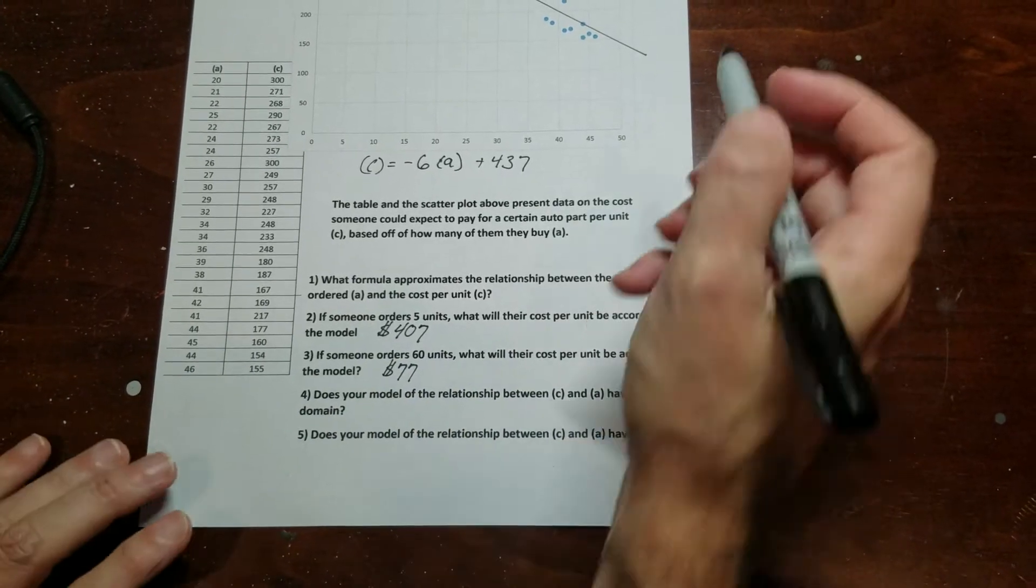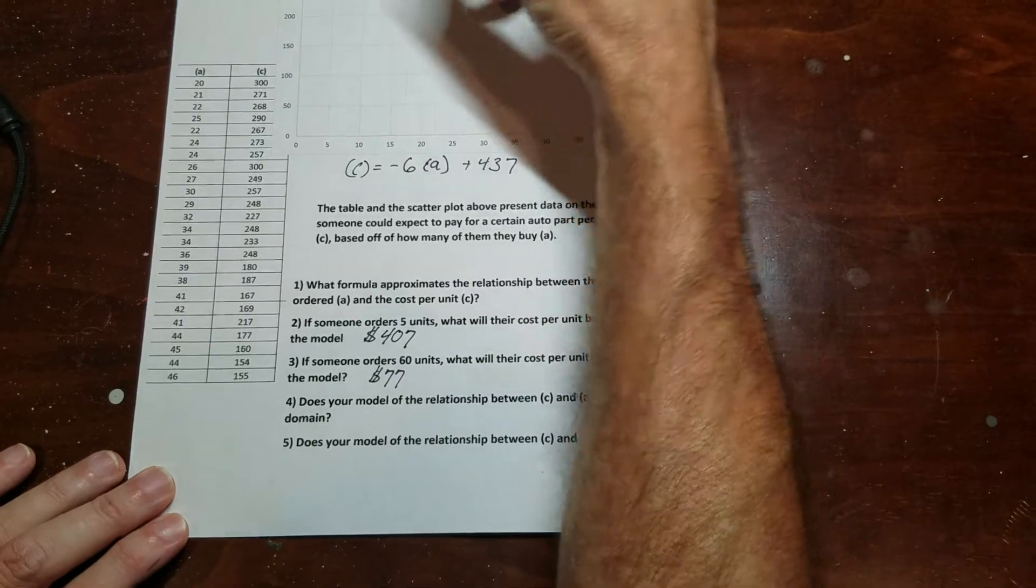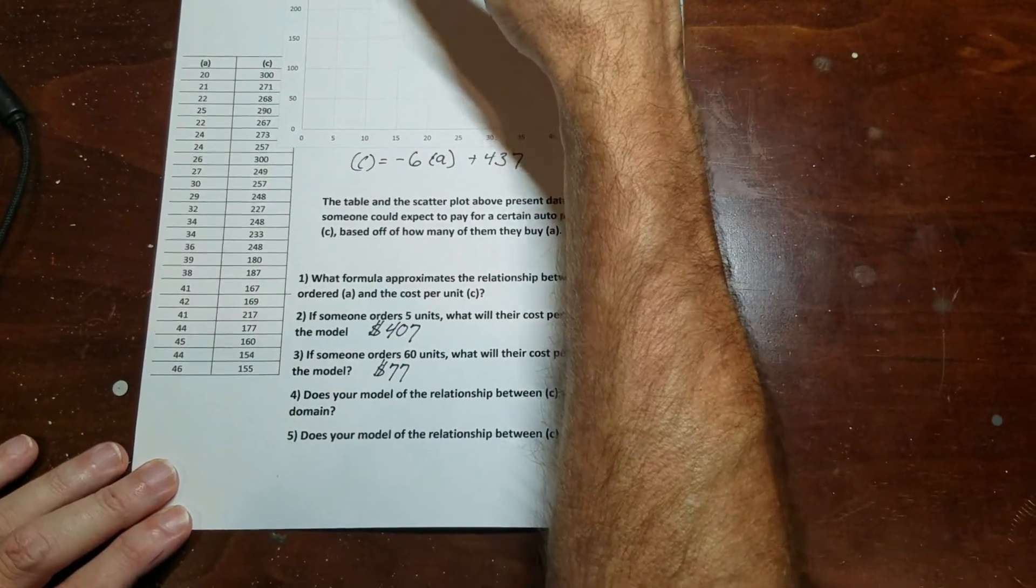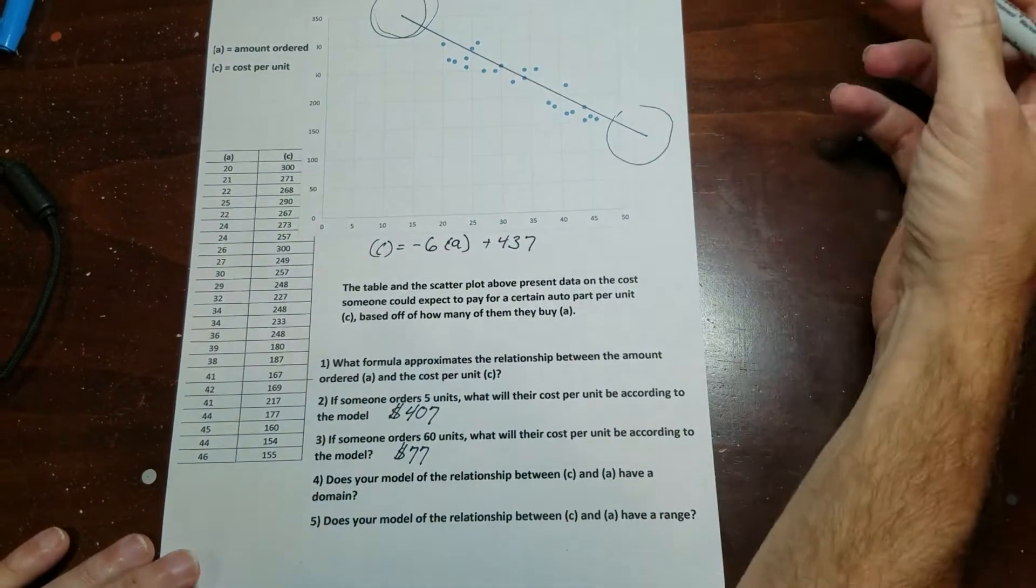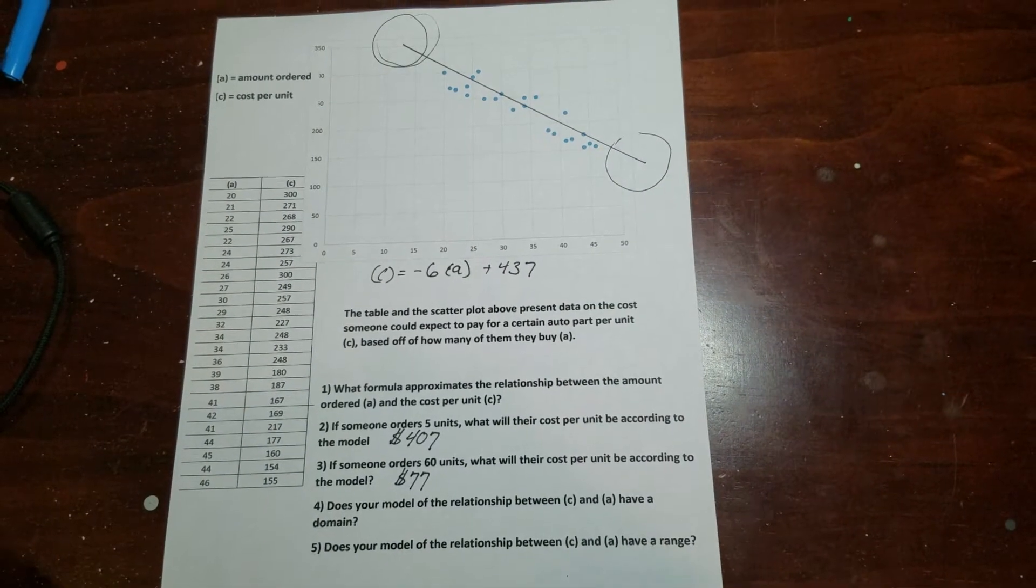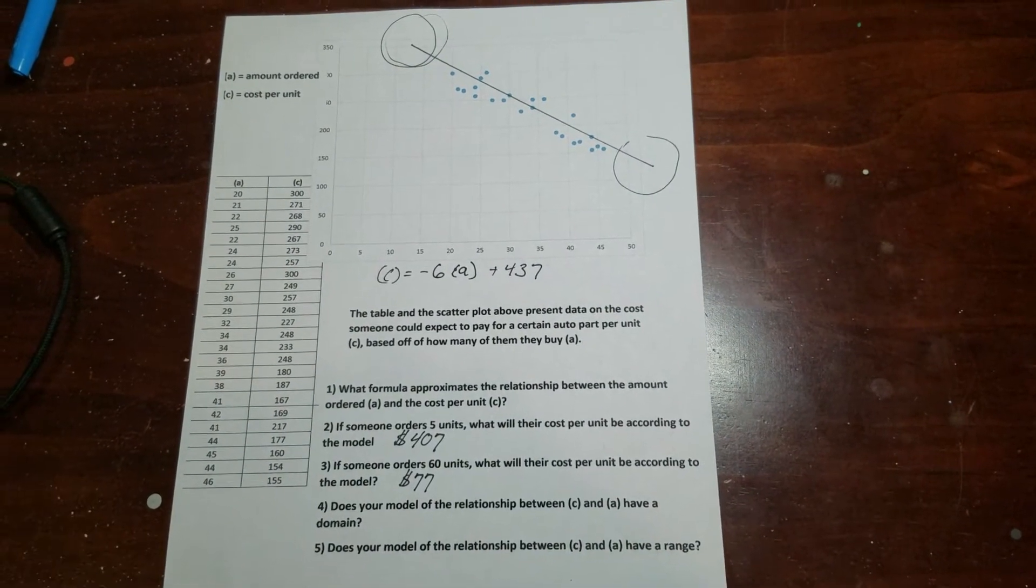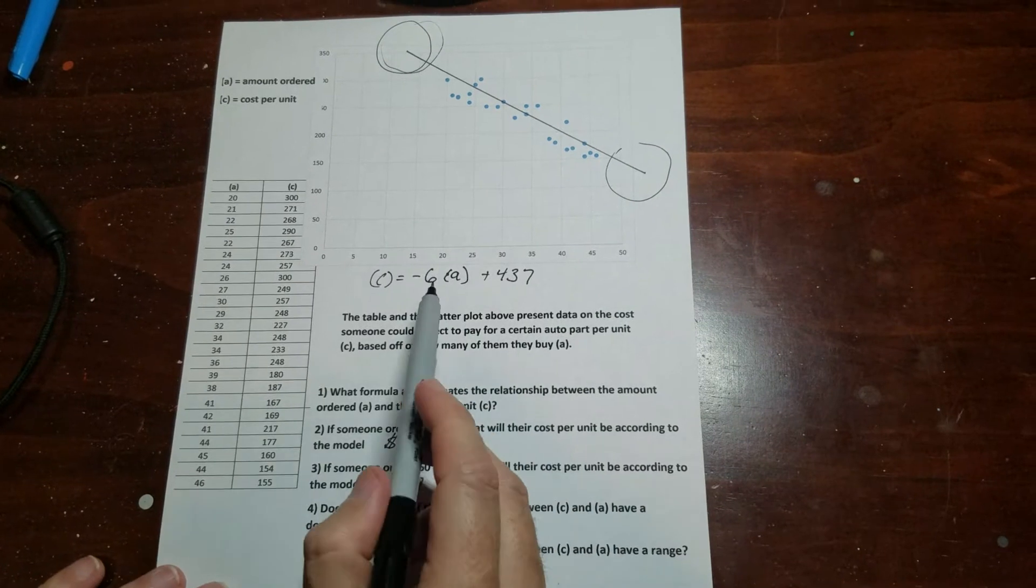Once you start to get to the ends of the line, in other words, once we're up in this zone over here and in this zone right here, usually what happens is our model starts to fall apart. It starts to get a little wacky. For example, if we look at our rule,